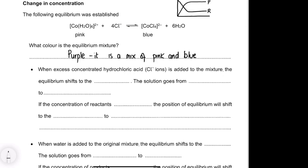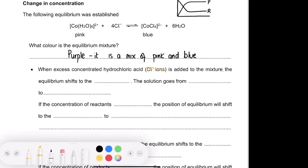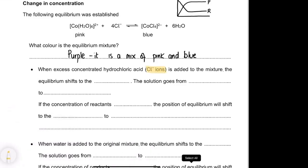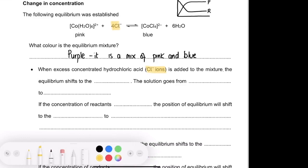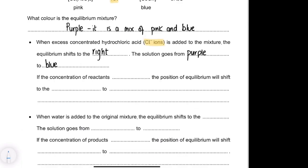What would happen if we added excess concentrated hydrochloric acid, which contains Cl⁻ ions? Cl⁻ ions appear on the left-hand side of the equation. According to Le Chatelier's principle, the equilibrium will shift to oppose that change — to remove the added chloride ions by converting them into the products on the right. So we've added a reactant, and the equilibrium will shift to the right to remove it.